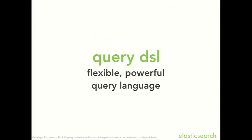The query DSL is how you query Elasticsearch. It's flexible, it's powerful, and you can really express complex sets of logic and relevance calculations. But it's a bit of a black box — people tend to copy and paste bits together, throw it into one big chunk of JSON and hope that it works. Not many people understand how it works, and this is what the talk is about.